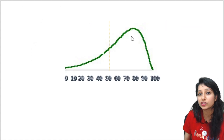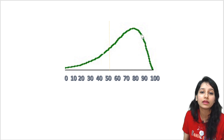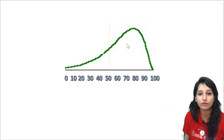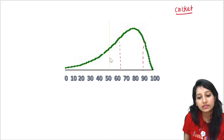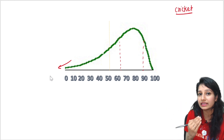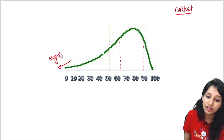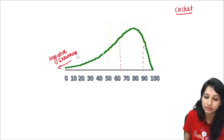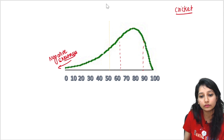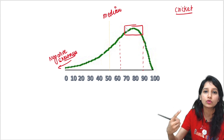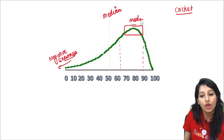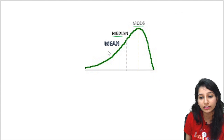Now if I take another match where cricketers' performance was better from the center value — their performance was better than 50. In the next cricket match they scored more from 70 to 90. In this condition, you can see that the tail is made on the left-hand side, made of less numbers. So this is called negative skewness. The center value is the median. The mode is the most repeated score — about 80. Then the median, and the mean is the least. So the mode is the most, then median, then mean.